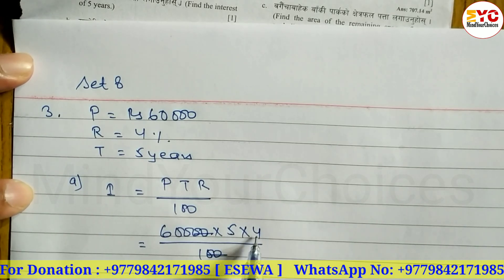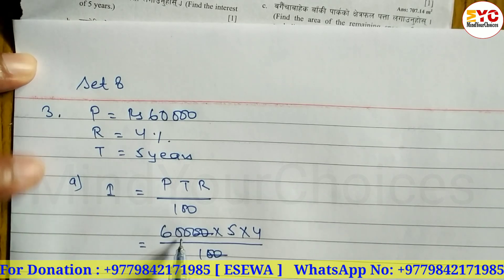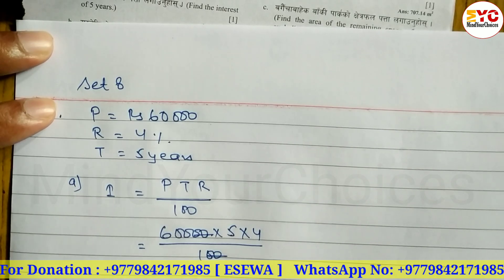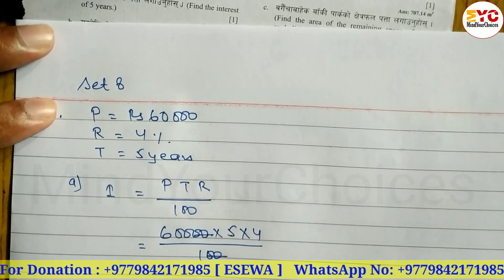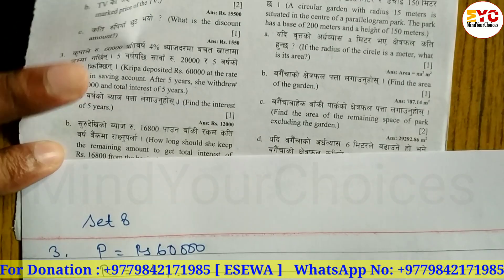Calculating: 5 × 4 is 20, then 20 × 6 is 120, giving us 12,000 after cancelling the zeros. So the interest of 5 years is Rs. 12,000.